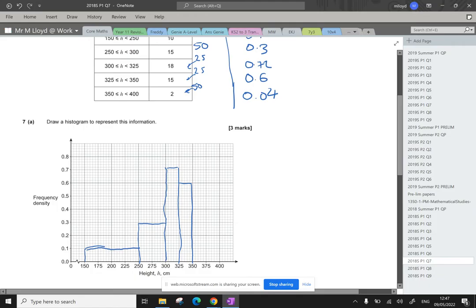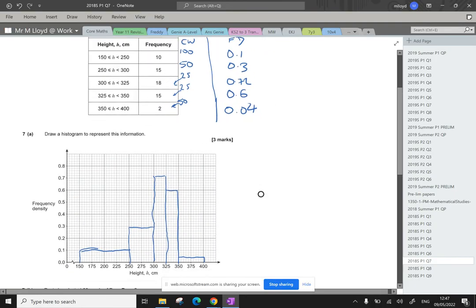And then finally, 0.04. So that's just two little squares up. Going across to 400. Brilliant. Okay, there we go. So that's our histogram drawing, three marks in the bag.